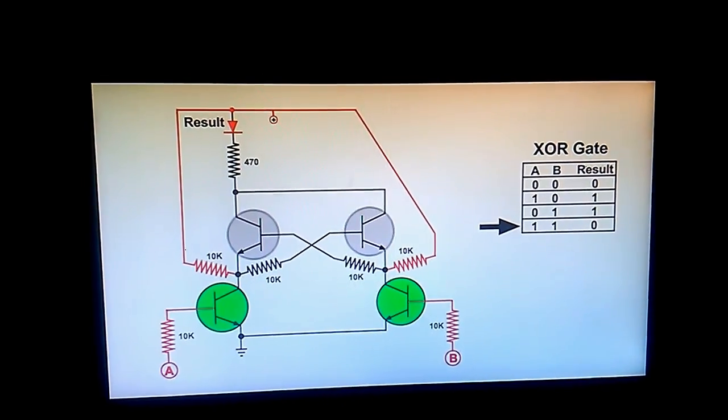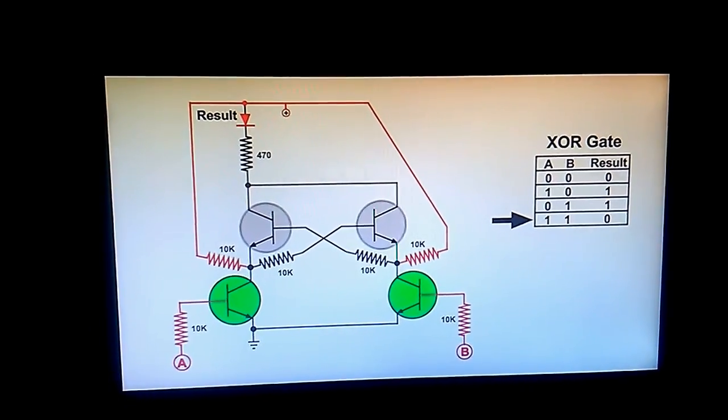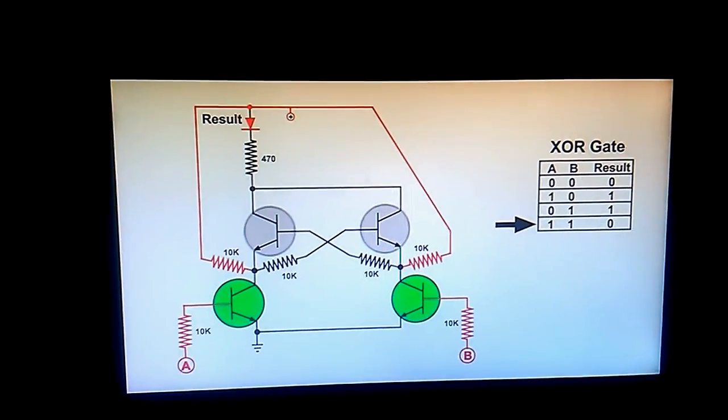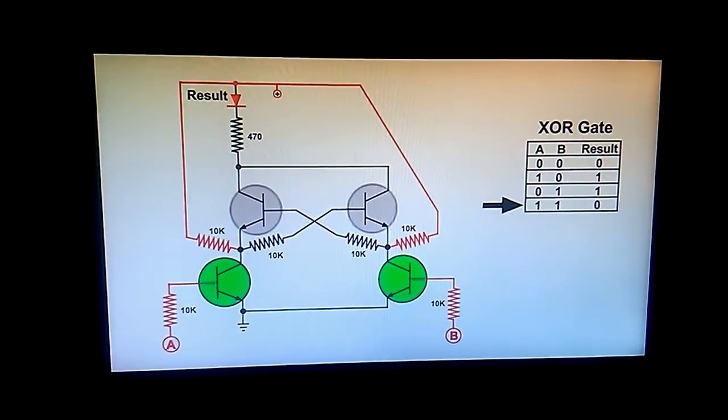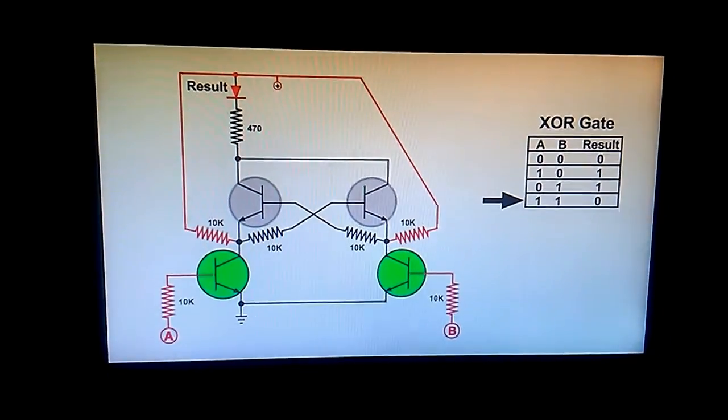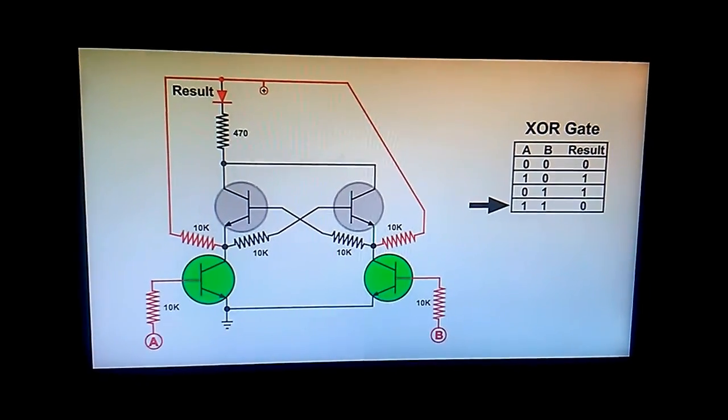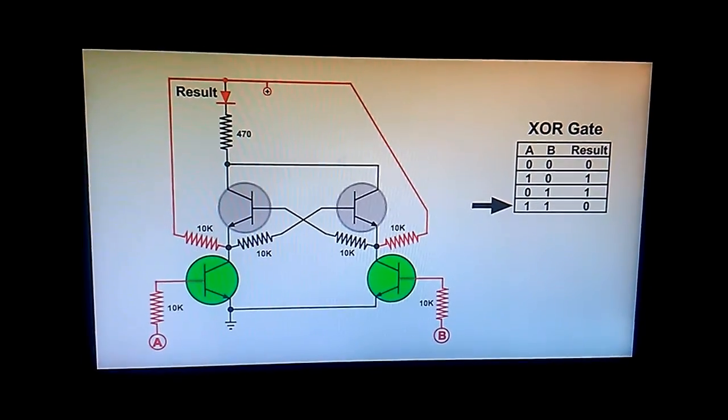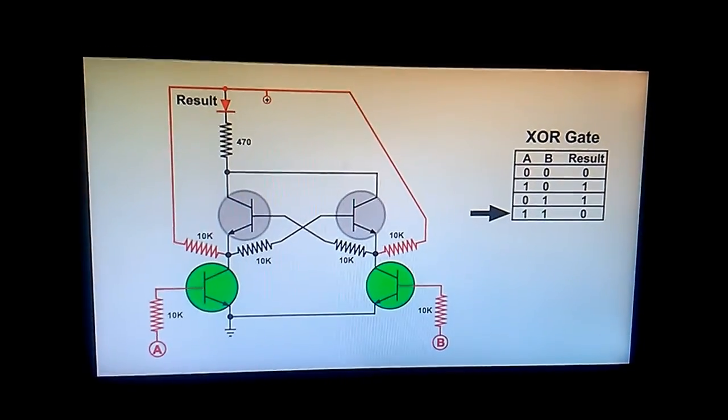Now when I put a signal on both A and B, the bottom two transistors short out the bias for the top two transistors and they are turned off. So the result is the LED is not lit.